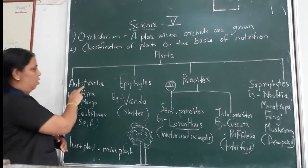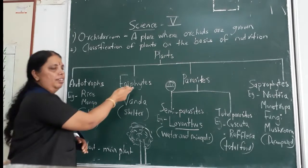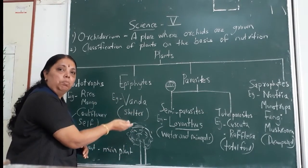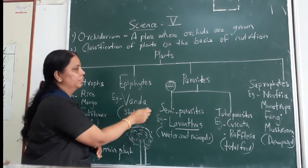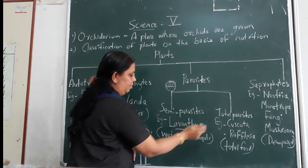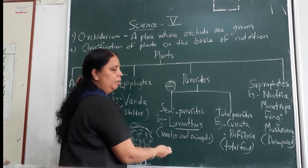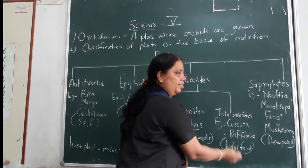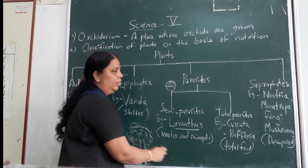So, to summarize: first is autotroph — they can prepare their food by themselves. Second is epiphytes — they prepare food but they need plants for support. Parasites: semi-parasites prepare food by drawing water and minerals from the host plant. Total parasites totally take all the food from the host plant. Now, the last group.